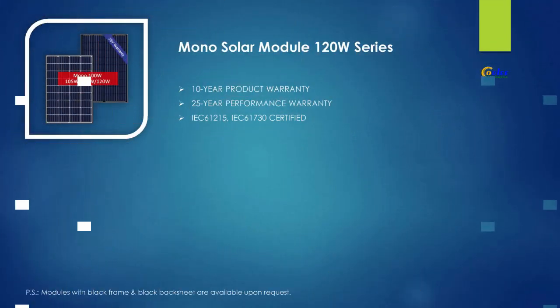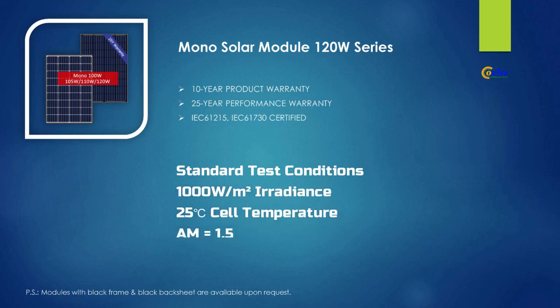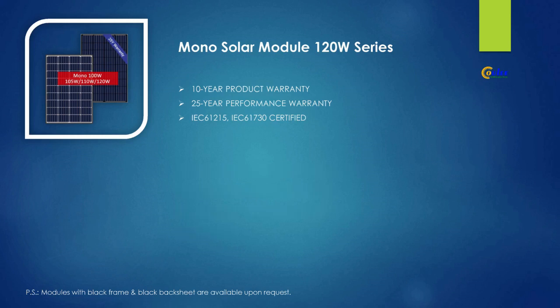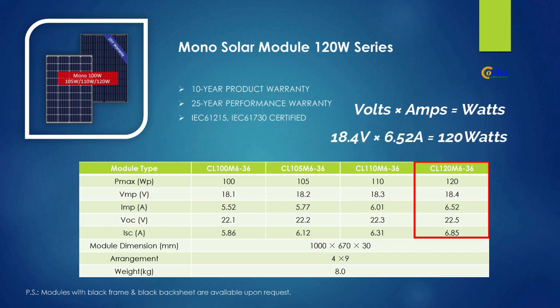For this example, I selected the Cooley 120 watt 12 volt solar panel. Solar panel ratings are given under standard test conditions: the light source calibrated to deliver 1000 watts per meter squared onto the surface of the panel, and the surrounding ambient temperature is kept at 25 degrees Celsius. We know that volts times amps equals watts. So if we use the maximum operating voltage of 18.4 volts and multiply that by the maximum operating current of 6.52 amps, we get 120 watts.